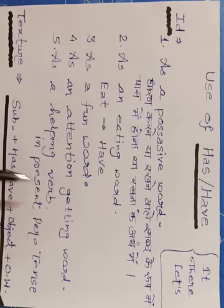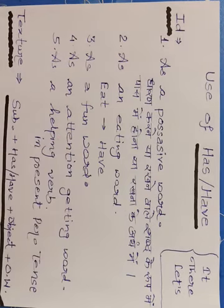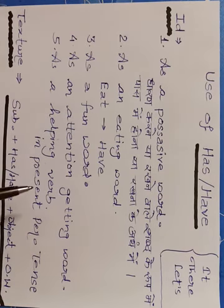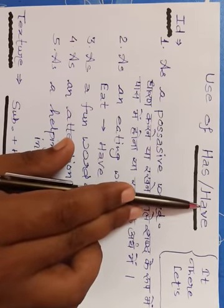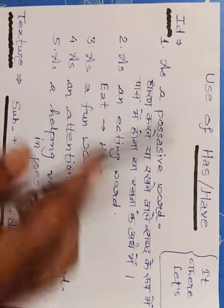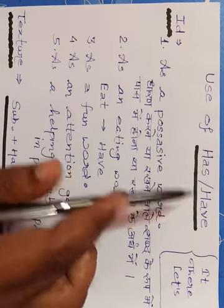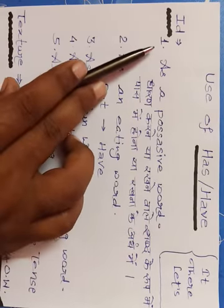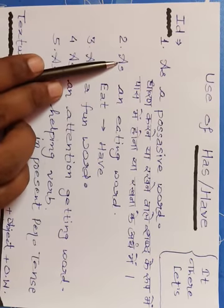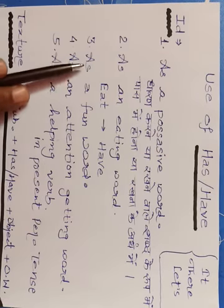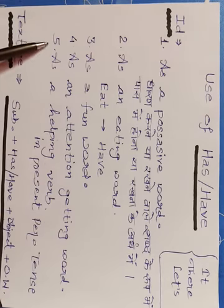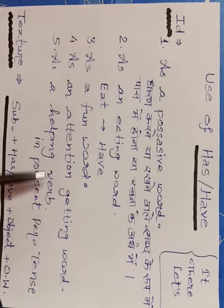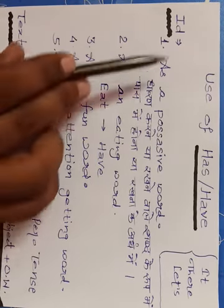Next, fifth one: as a helping verb. Has aur have ka bahut bada use case mein hota hai — helping verb ke roop mein — kahan par? In present perfect tense. Jab hum present perfect tense ki study karenge, tab aap dekhenge ki has aur have ka use phir se hamare paas aayega. So, there are five different identifications of has and have: possessive word, eating word, fun word, attention-getting word, and as a helping verb in present perfect tense.